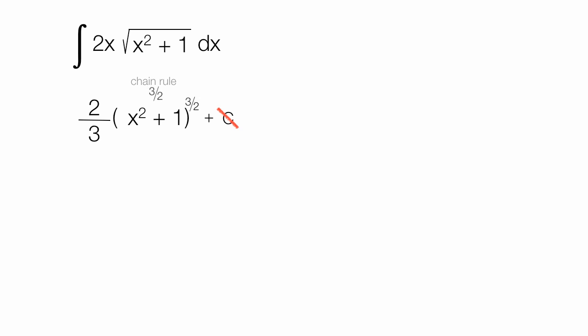Now I use the chain rule. So I take 3 halves times 2 thirds, which is 1. I subtract 1 from the exponent, which gives me 3 halves minus 1, which is 1 half. I take the derivative of the inside, which is 2x.